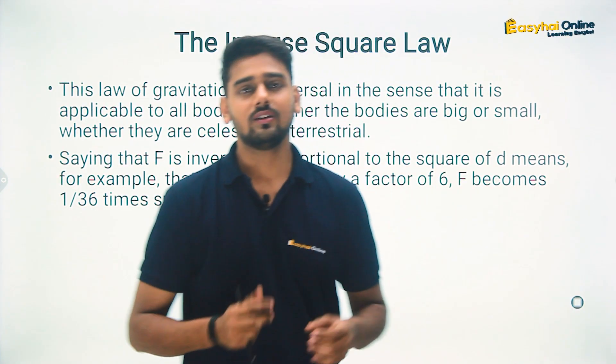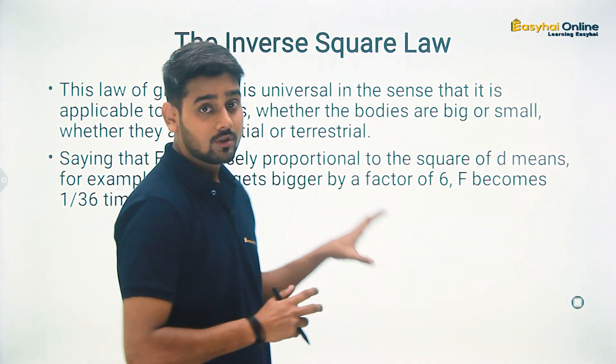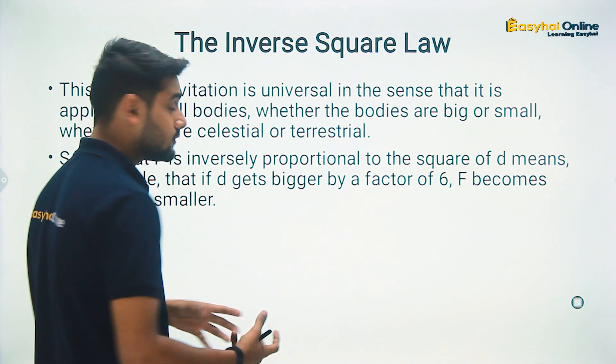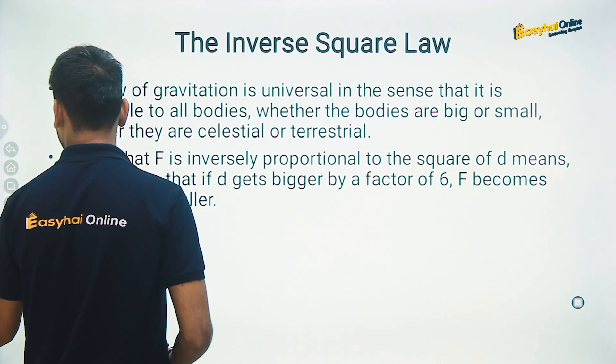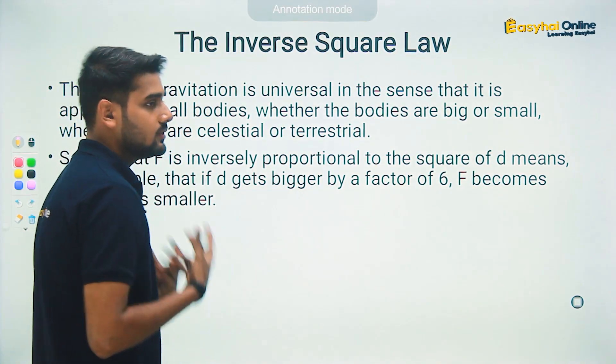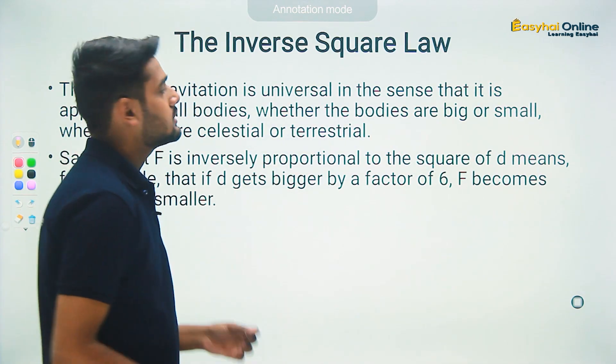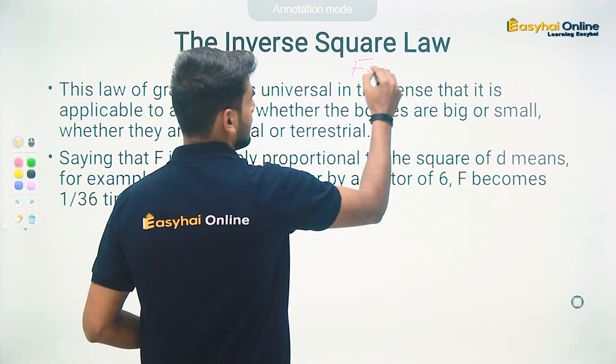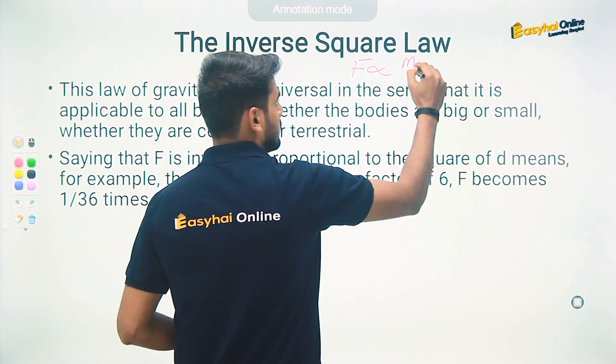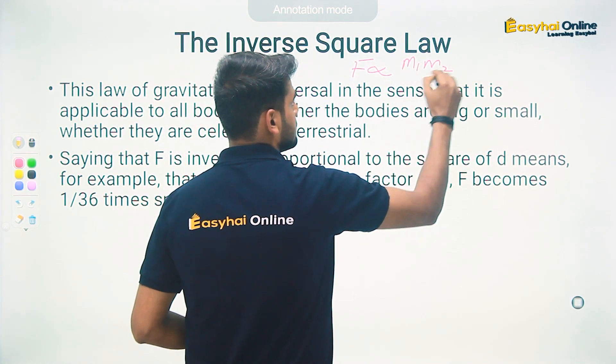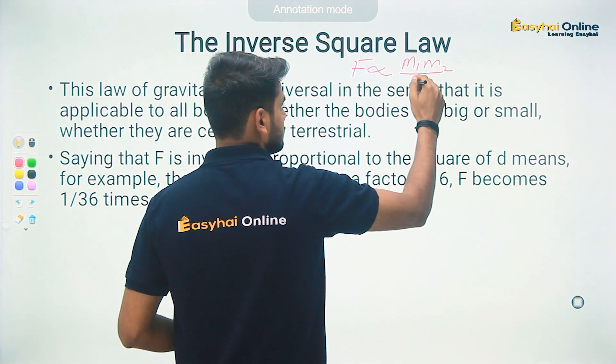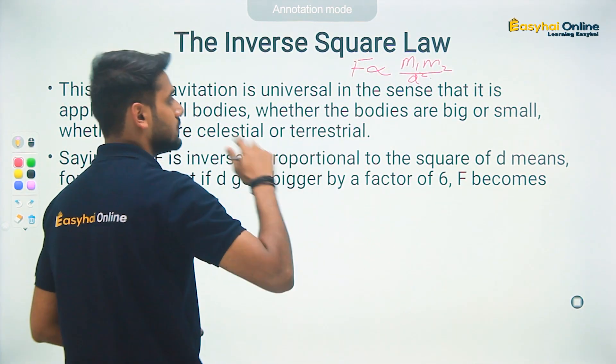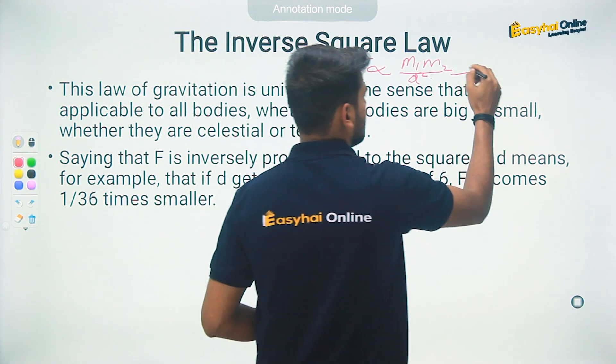Hello students, today we are going to learn about inverse square law - what is the consequence and meaning of this inverse square law. We learned that in the universal law of gravitation, the force is directly proportional to the product of masses of two objects. This is basically an inverse proportionality relation to separation, so we can write F is inversely proportional to the square of separation distance between any two objects.